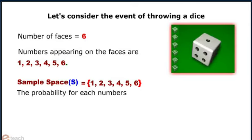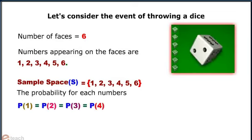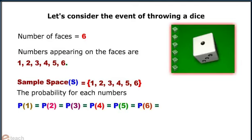Now the probability of each number is P(1) = P(2) = P(3) = P(4) = P(5) = P(6) which comes out to be equal to 1/6.